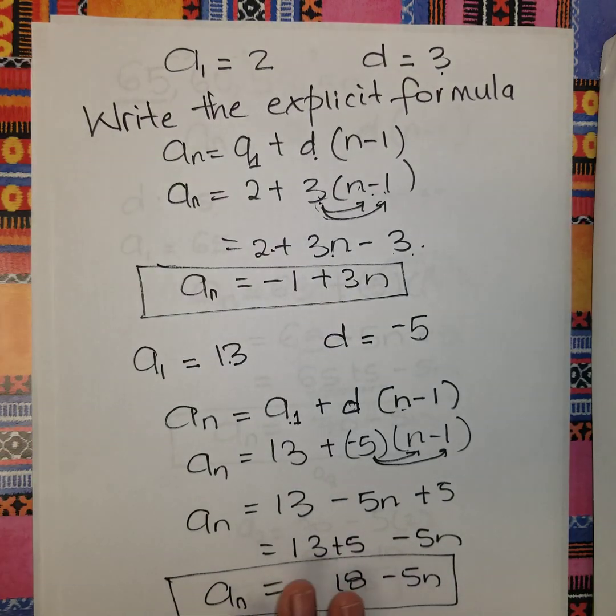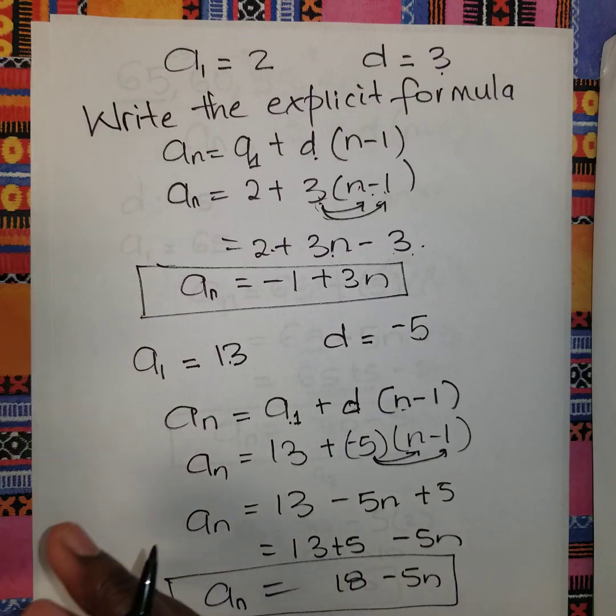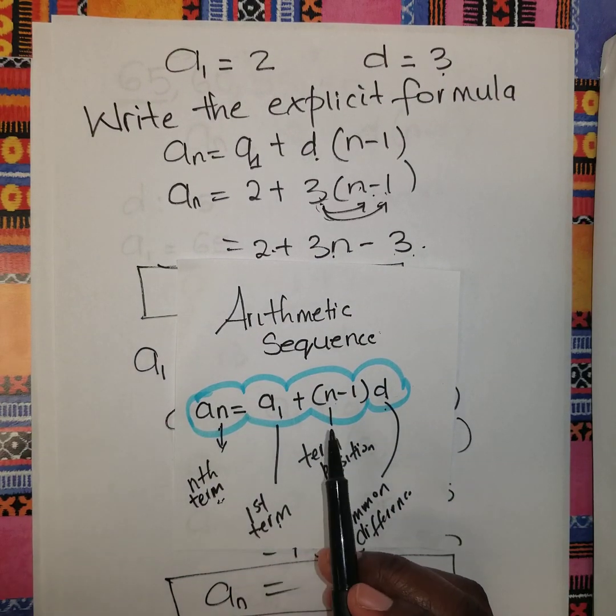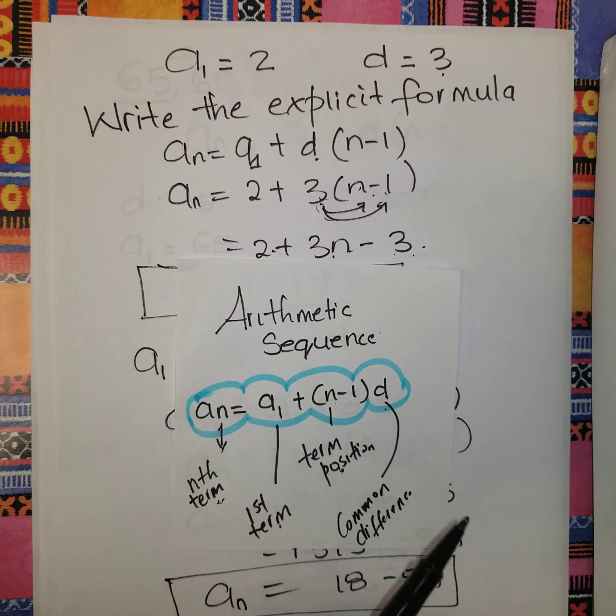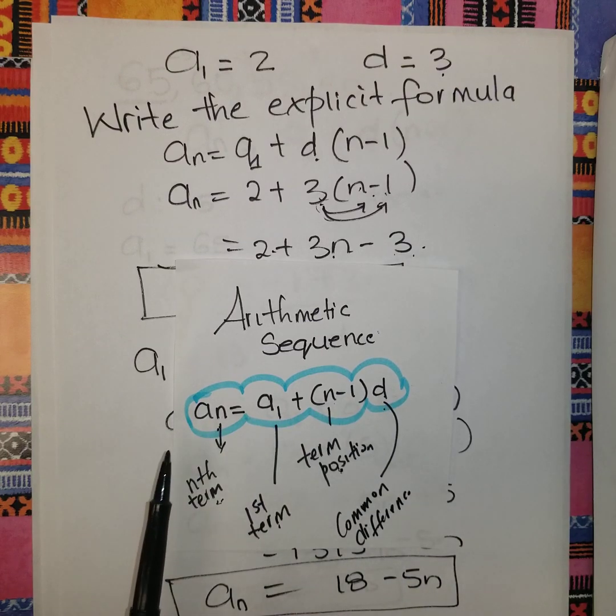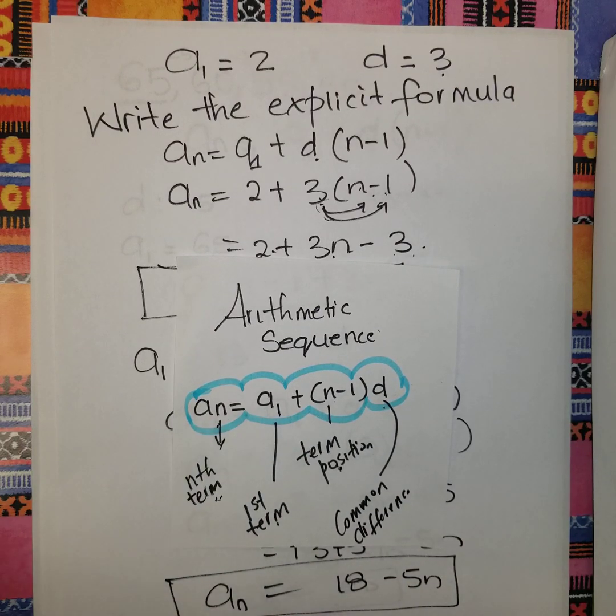The main goal of this lesson was for you to identify the general form and know how to find the common difference and first term. Given these two things, you can always find the explicit formula for any arithmetic sequence or progression. Thank you for watching! Remember to like, share, and subscribe to my channel, and I'll see you in the next video.